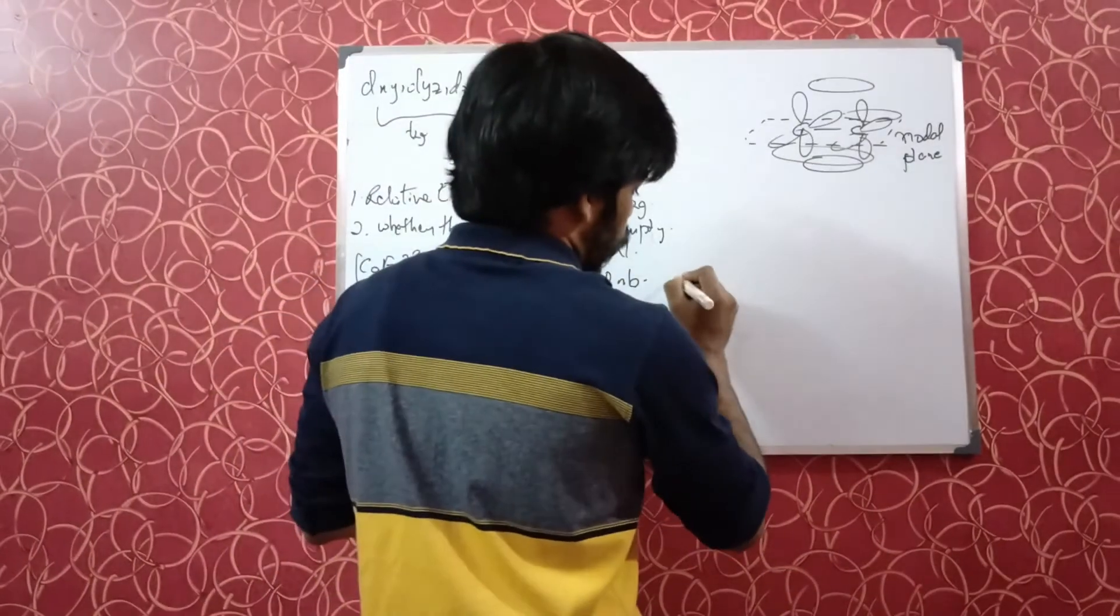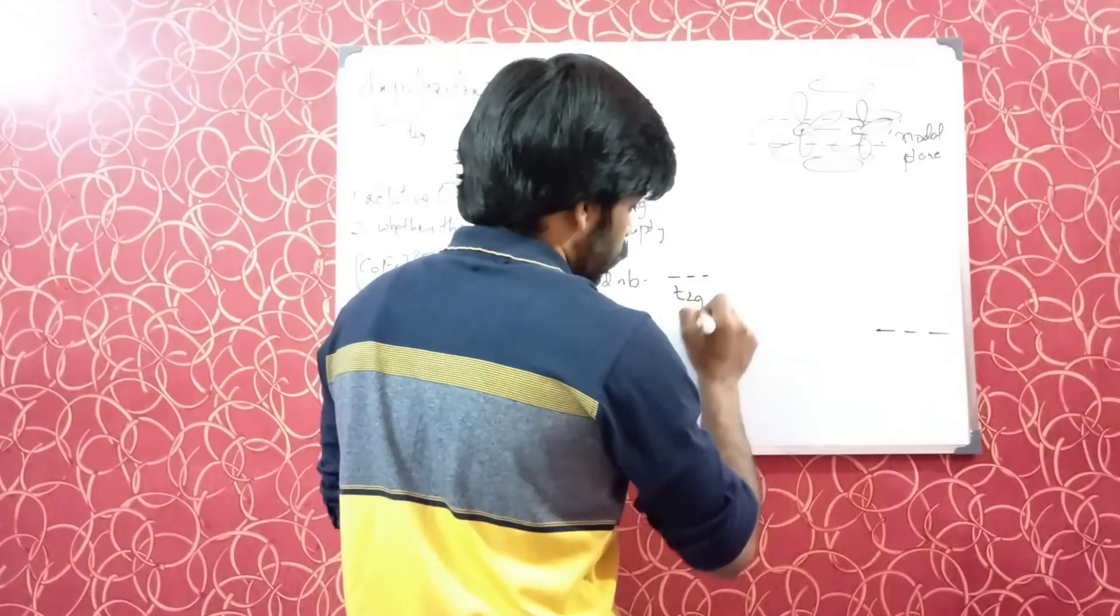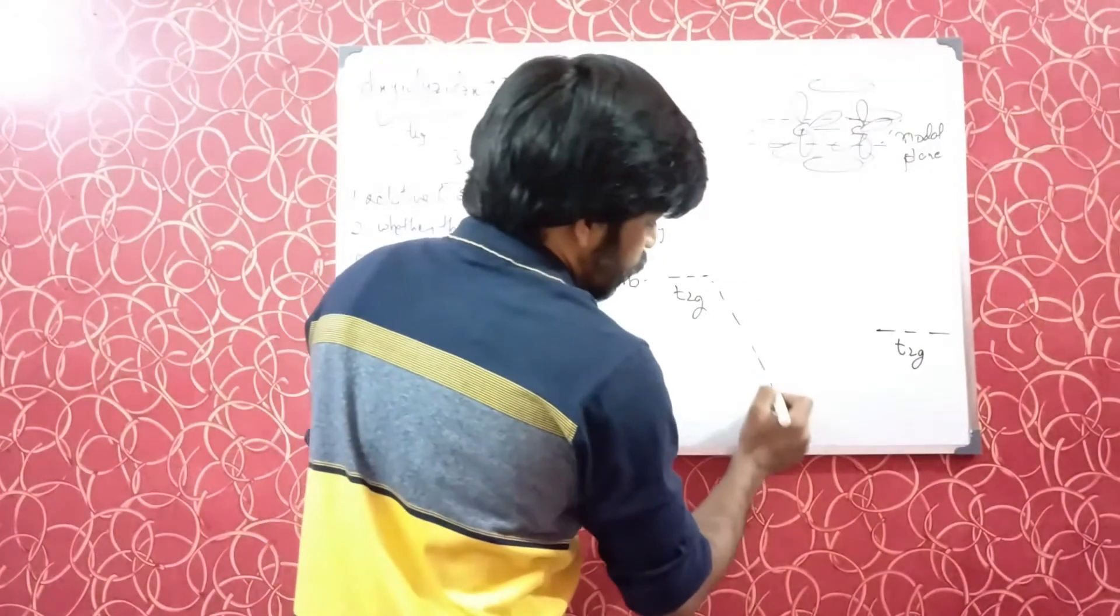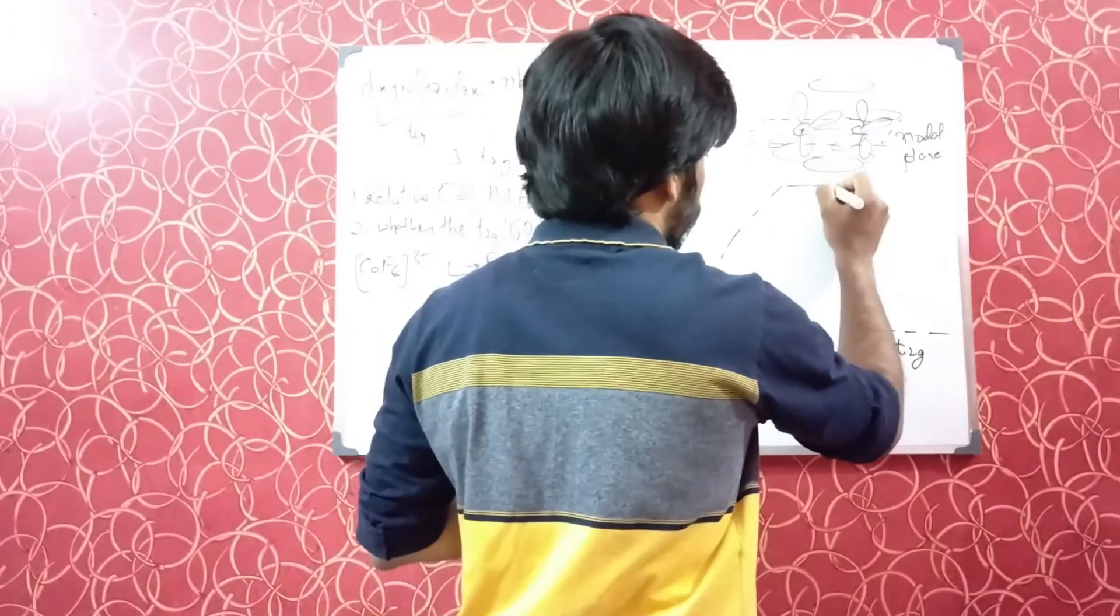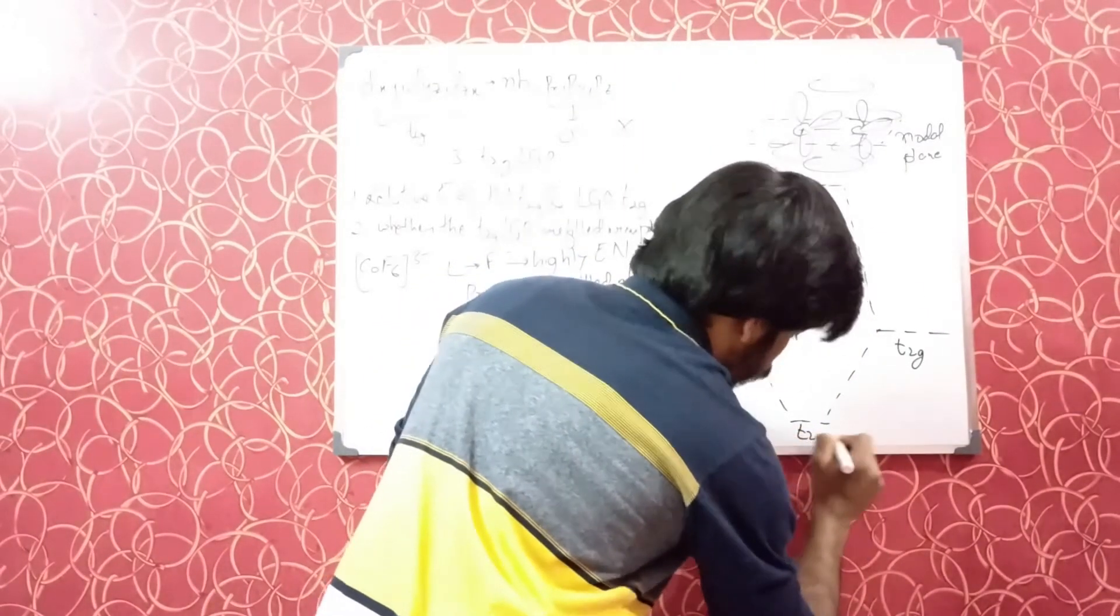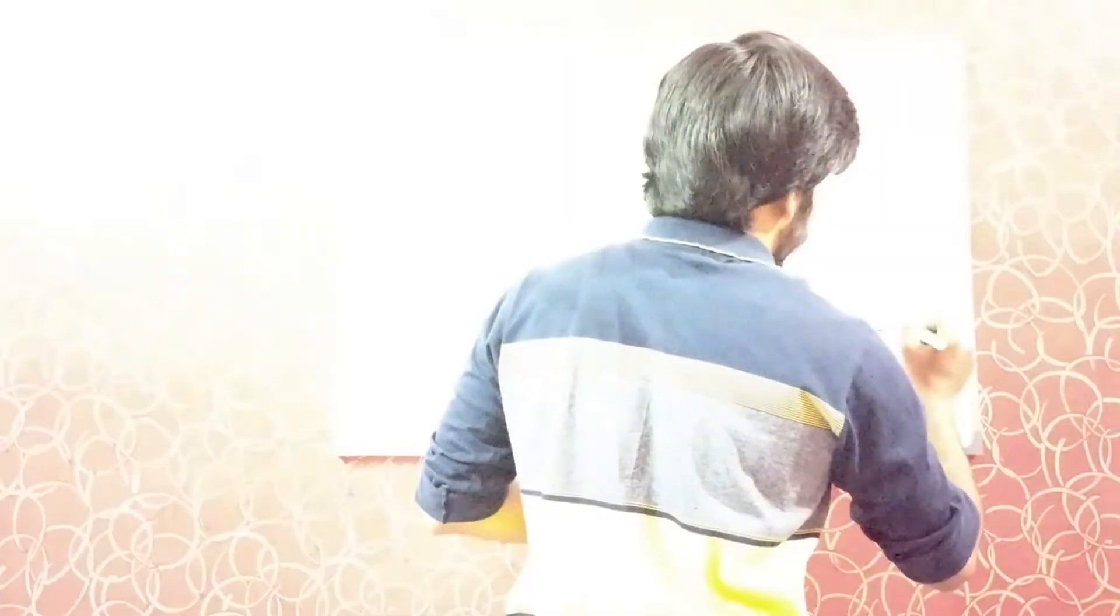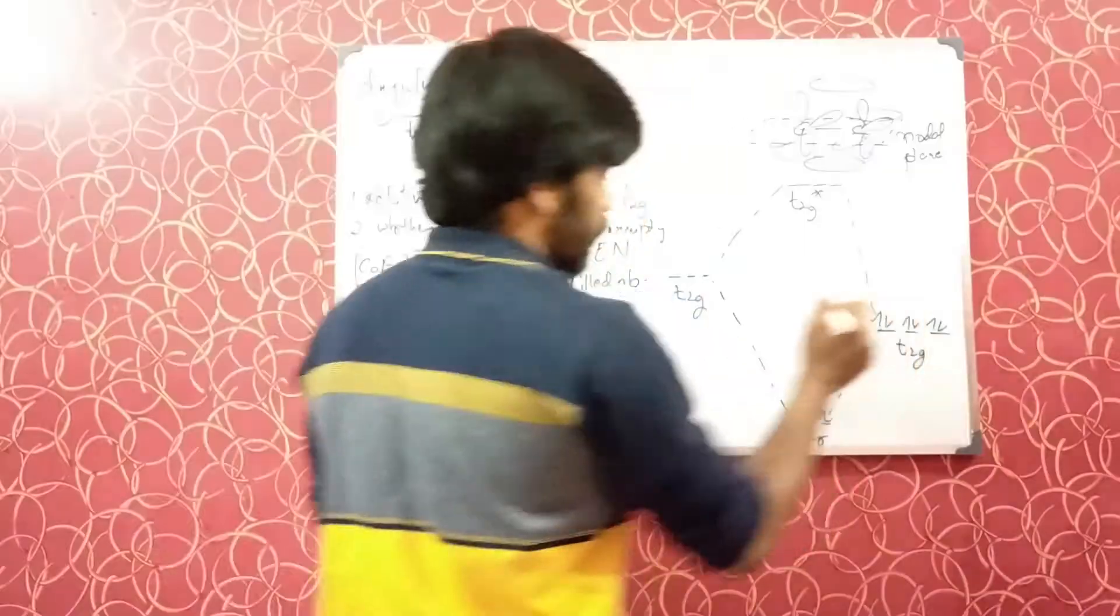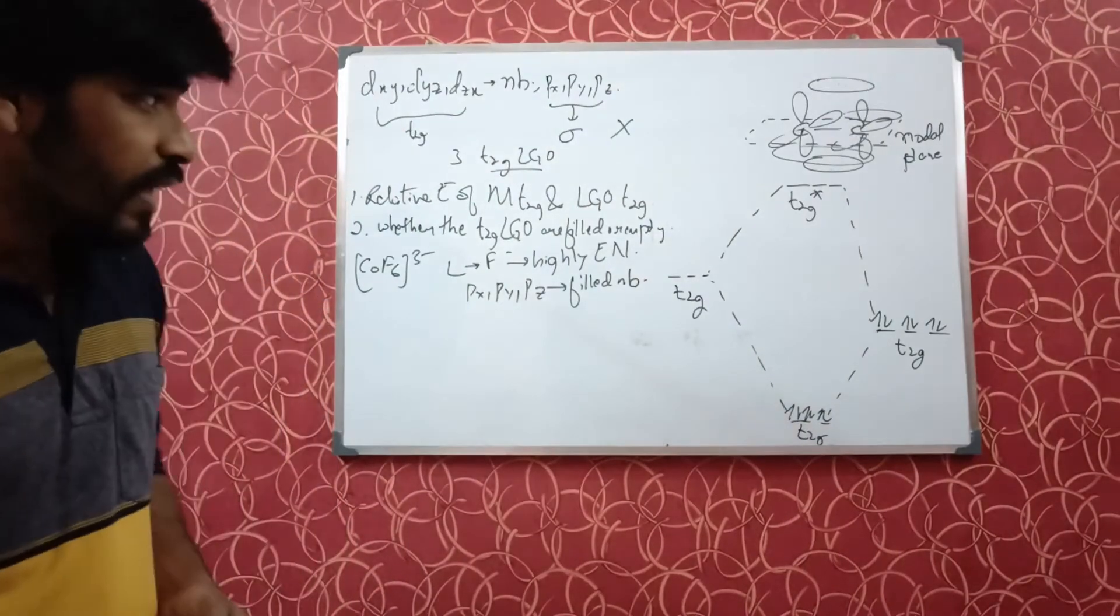Let's take a look at the energy level diagram now. These are your metal t2g orbitals, these are your ligand t2g orbitals, and this will be your molecular orbital for bonding and anti-bonding. This is your t2g bonding, this is your t2g star anti-bonding. Now, since they are already filled, these will be occupied by the electrons of the ligand, these will be occupied by the electrons of the metal.